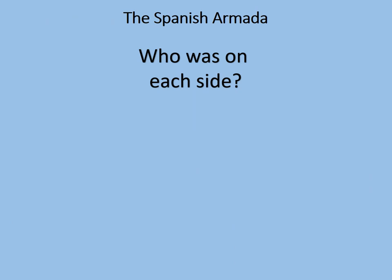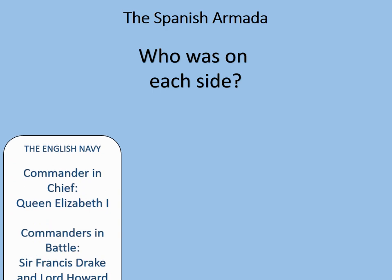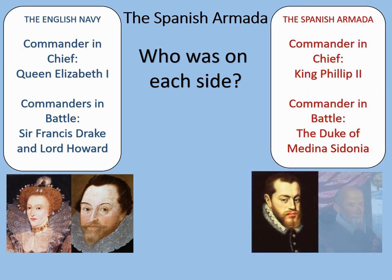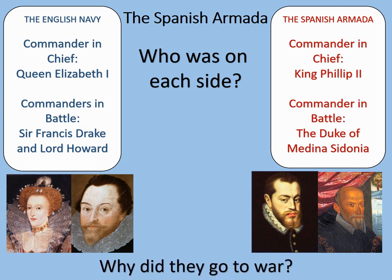Let's consider the Spanish Armada — who was on each side? On one side, the English Navy, whose commander-in-chief was Queen Elizabeth I, with commanders in battle Sir Francis Drake and Lord Howard. On the other side, the Spanish Armada — 'armada' is just the Spanish word for navy — commanded by King Philip II, with the Duke of Medina-Sidonia as commander in battle. Record this information and pause the video, then press play when you're ready to continue.